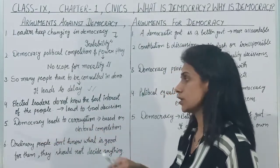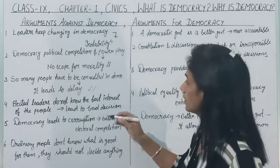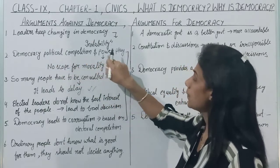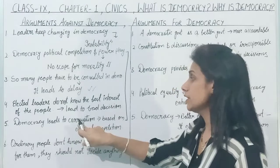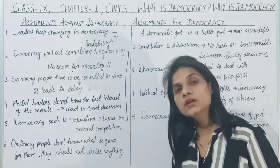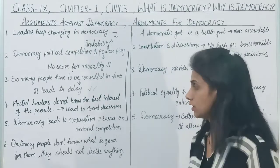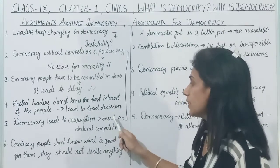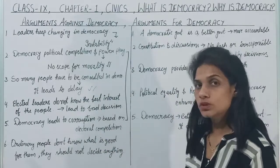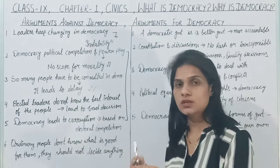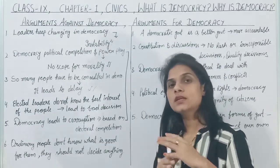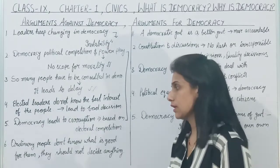Democracy leads to corruption. We can relate this to the second point — democracy is a political competition and power play. How does it lead to corruption? Parties fund elections through both legal and illegal means. This corruption is based on electoral competition. The parties compete in ways that lead to corruption during elections.